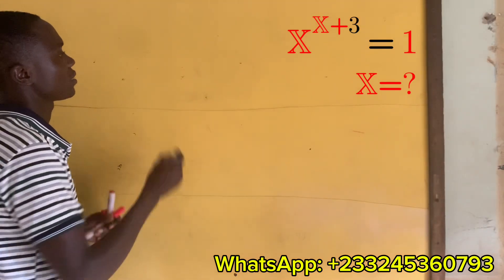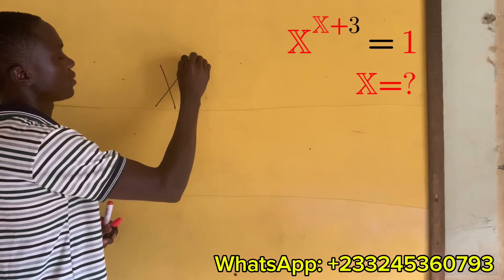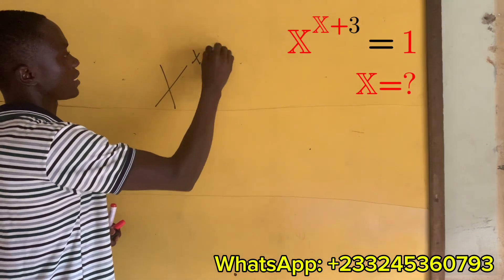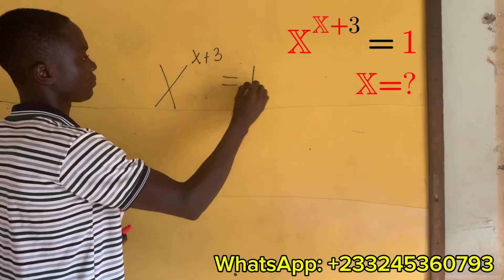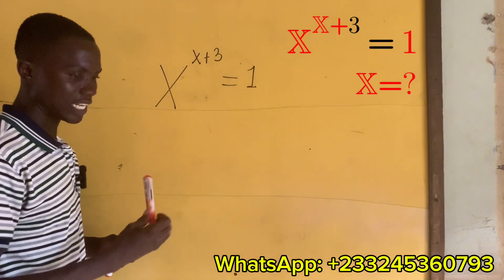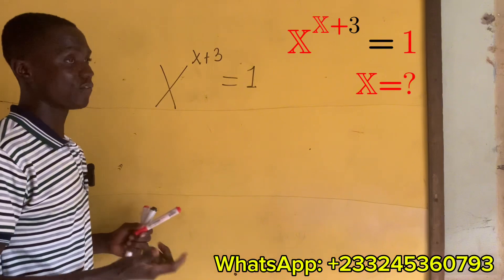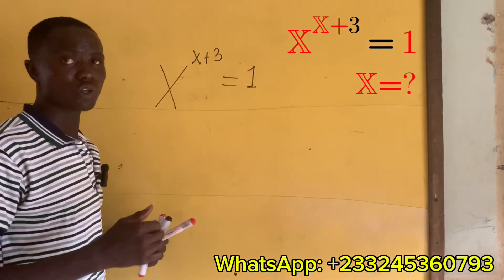We have x exponent x plus 3 equals 1. What are the possible values of x that we can think of? I can first think of 1, because 1 exponent any number is 1.